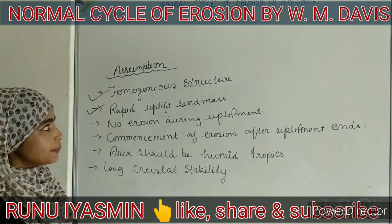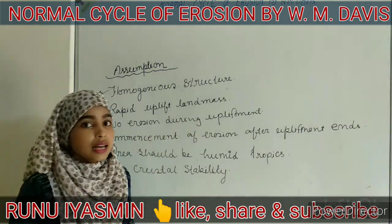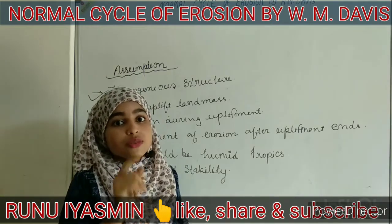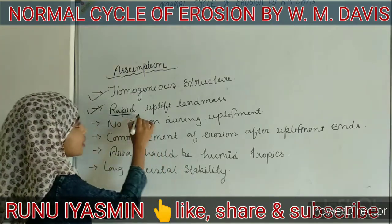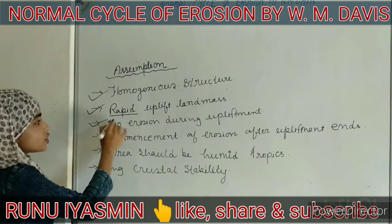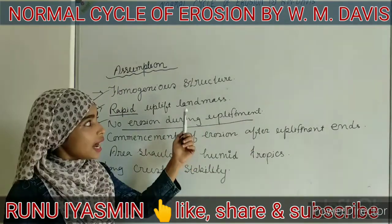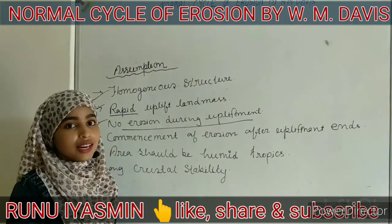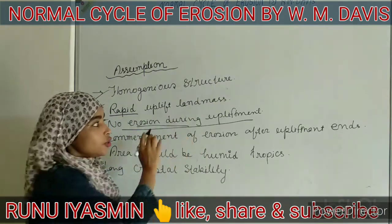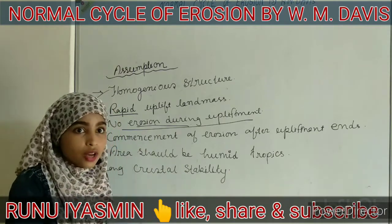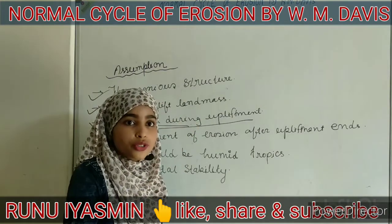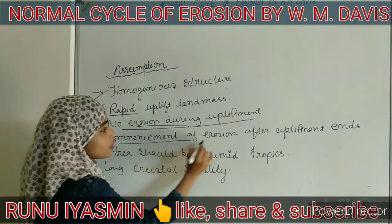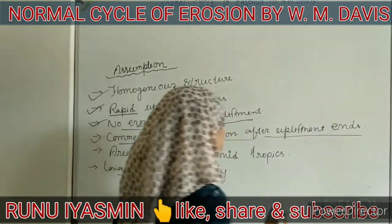Next is rapid uplift of the landmass — meaning the upliftment process is very rapid, very quickly. Next is no erosion during the upliftment. During the upliftment process of the landmass, there will not be an erosion process. Erosion process will take place only when the upliftment process stops. So the commencement of erosion is after the upliftment ends.